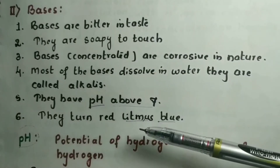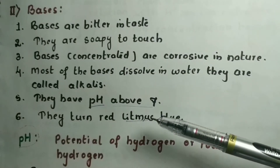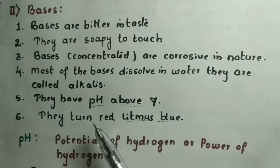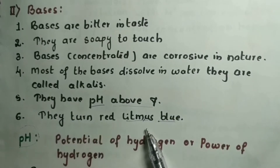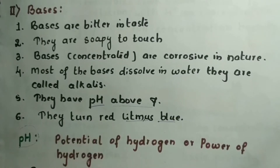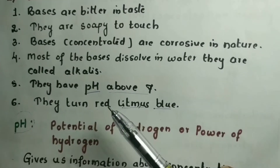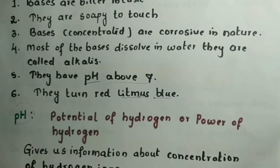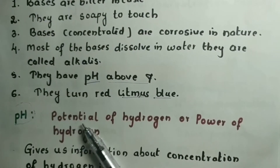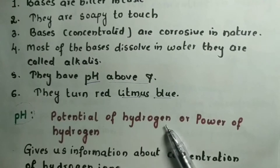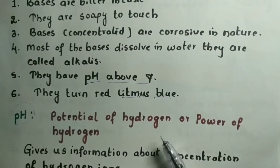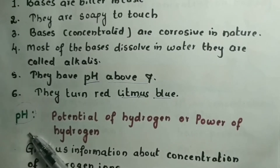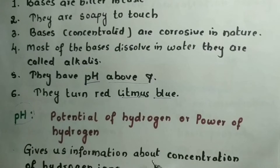While studying physical properties we came across words like pH and litmus paper. pH stands for 'potential of hydrogen' or 'potence of hydrogen.' pH always gives us information about the concentration of hydrogen ions in any solution.